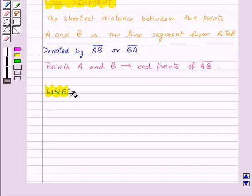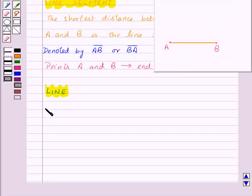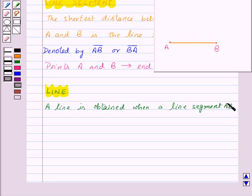Now let us move on to line. A line is obtained when a line segment AB is extended on both sides.